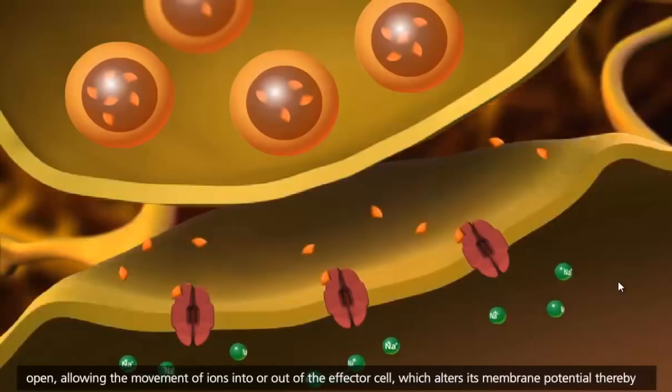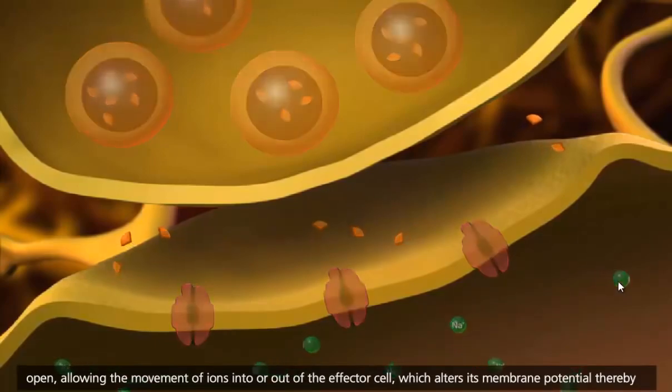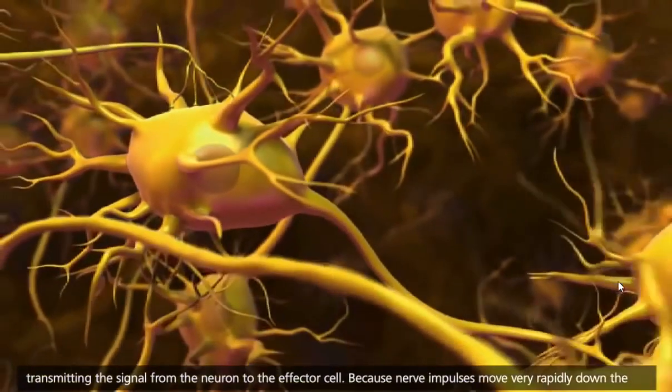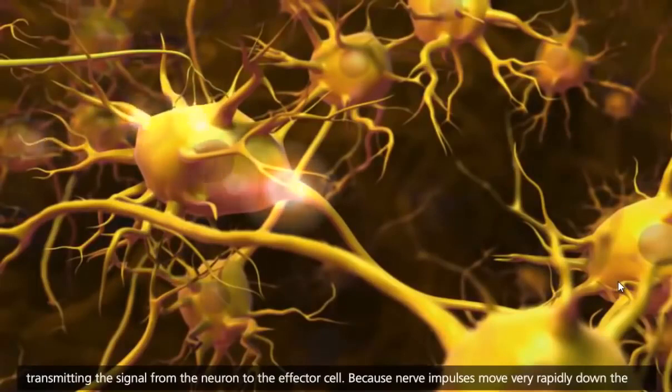The channels open, allowing the movement of ions into or out of the effector cell, which alters its membrane potential, thereby transmitting the signal from the neuron to the effector cell.